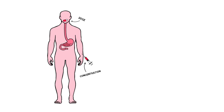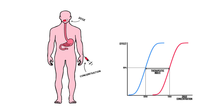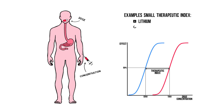Now let me throw in some pharmacodynamics here. The drug concentration at which a drug exerts 50% of its desired therapeutic effect is called the ED50. The concentration at which the drug exerts 50% of its toxic effects is called the TD50. If the ED50 and the TD50 are close to one another, it doesn't take much for a patient to OD on this drug. Examples of drugs with small therapeutic indexes like this are lithium, paracetamol, and digoxin.